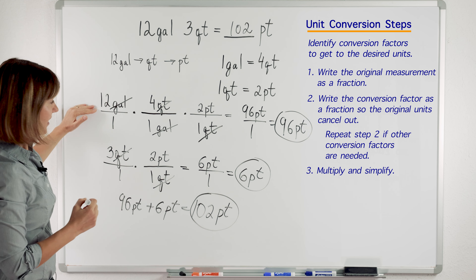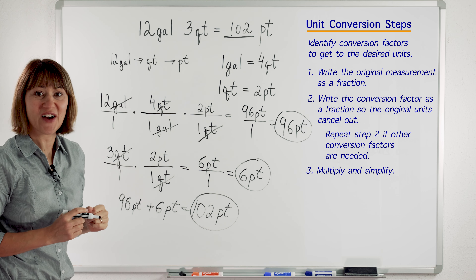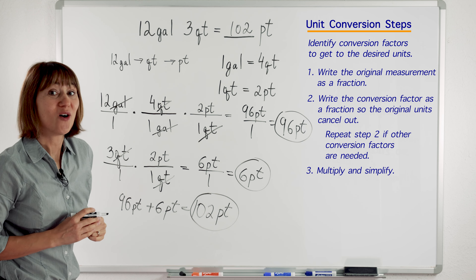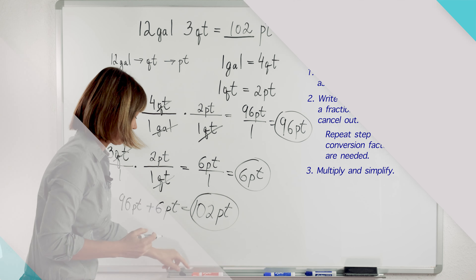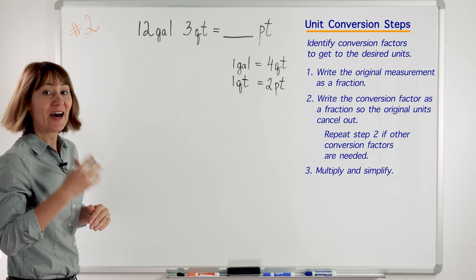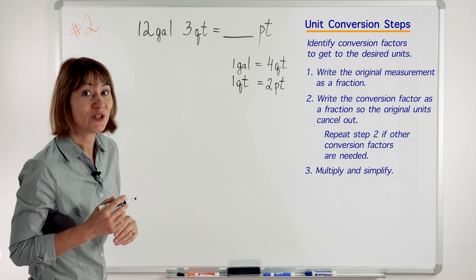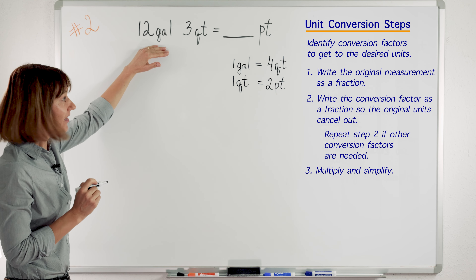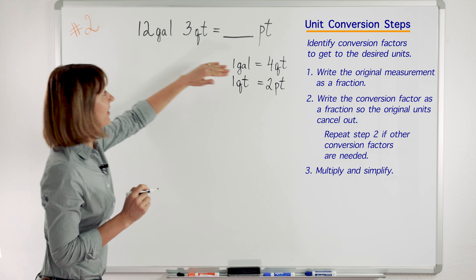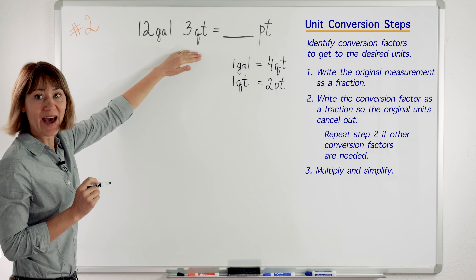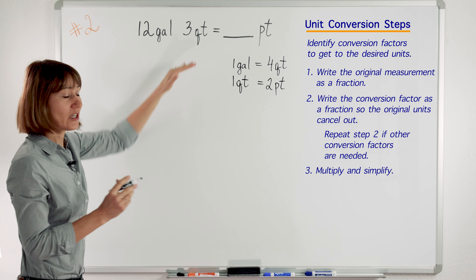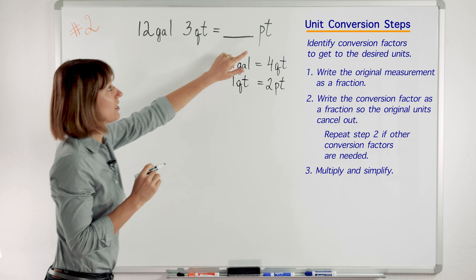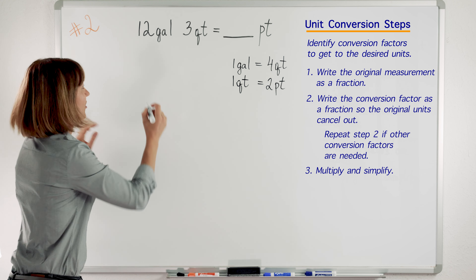So you see, that method took us 2 conversion factors. Now let's look at another way of doing it. This is a second way and you may like it more. We are going to change gallons into quarts, then add our 3 quarts to get the total number of quarts, and then we will change the quarts into pints.